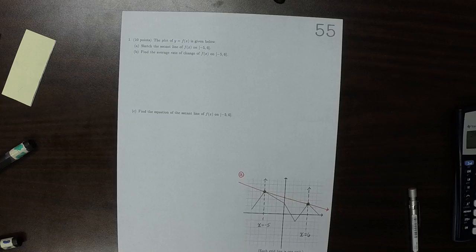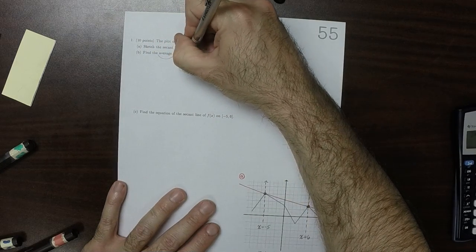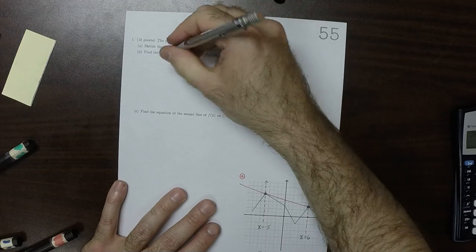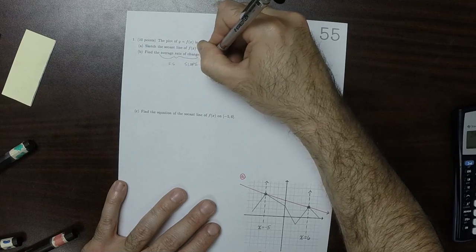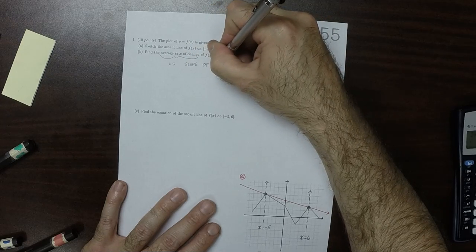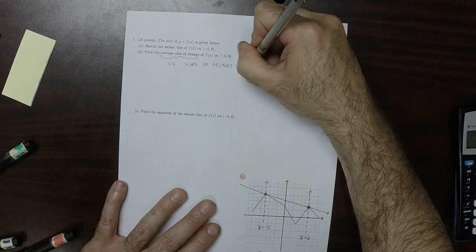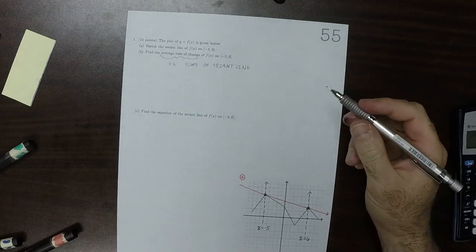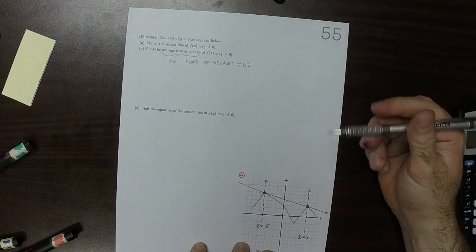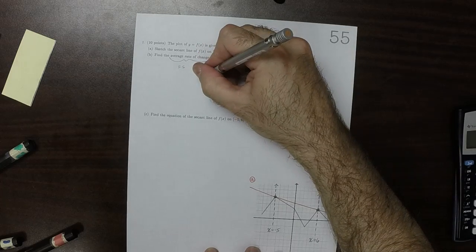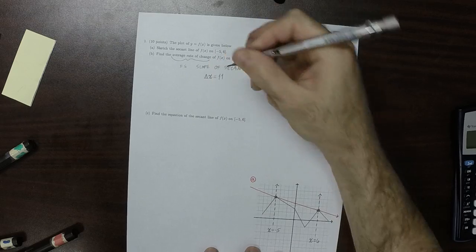Part B, find the average rate of change. So this is the slope of the secant line. So this can be obtained just by counting. So the distance between 6 and negative 5 is 11, so the change in X is 11.